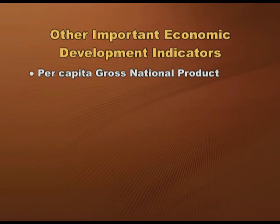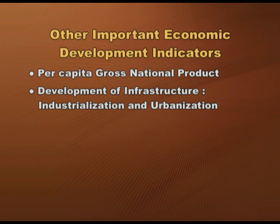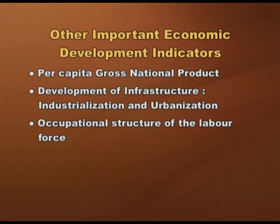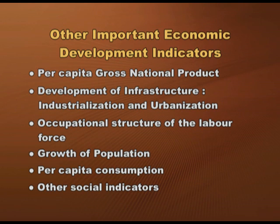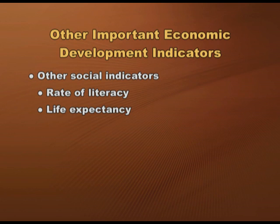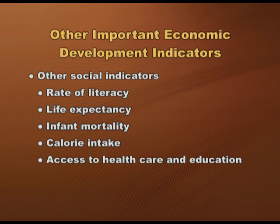Other important indicators of economic development include: per capita gross national product; development of infrastructure, which includes industrialization, urbanization, and growth of cities; occupational structure of the labour force — that is, how many people are engaged in the primary, secondary, or tertiary sector; growth of population; per capita consumption; and social indicators such as rate of literacy, life expectancy, infant mortality, calorie intake, and access to healthcare and educational facilities. In sum, economic development involves higher incomes, better education, higher standards of health and nutrition, less poverty, a cleaner environment, equality of opportunities, greater individual freedom, and a rich cultural life. Most developed countries show high ratings on these indices.